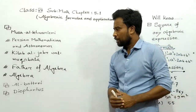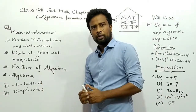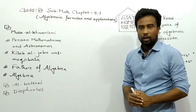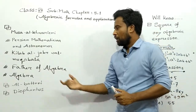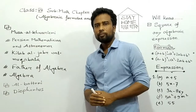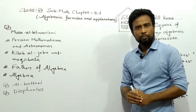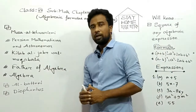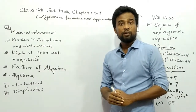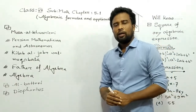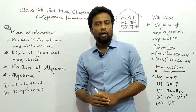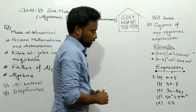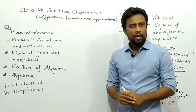You can see here another two great mathematician names. One is Al-Battani and another is Diophantus. Al-Battani was a great Muslim mathematician and astronomer, and Diophantus was a Greek mathematician. Today's main topic is algebraic formulas and applications.